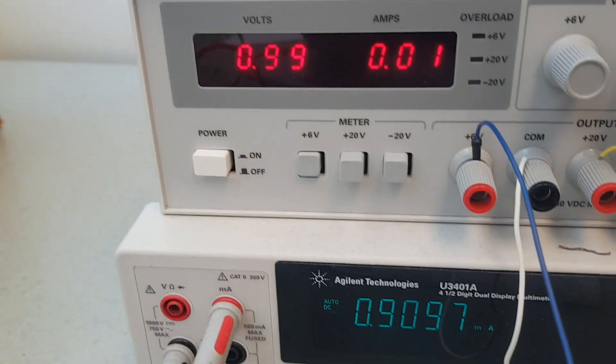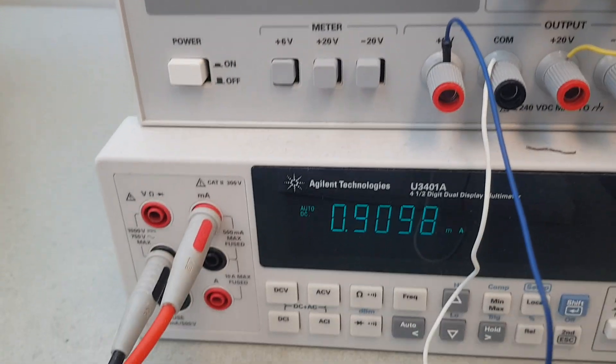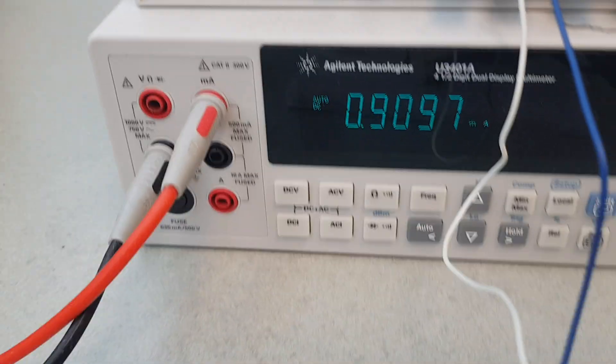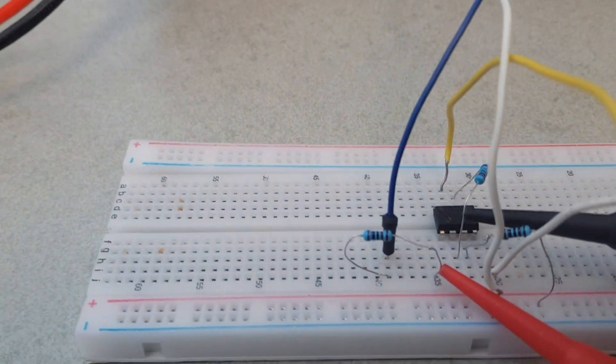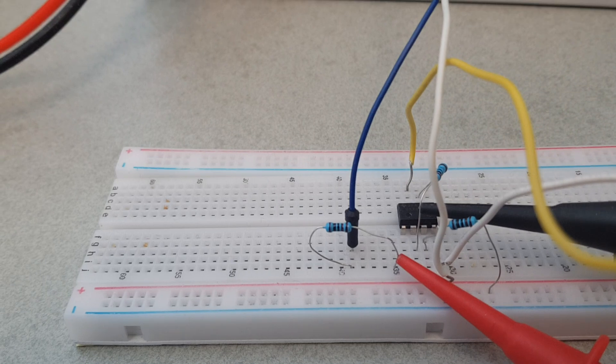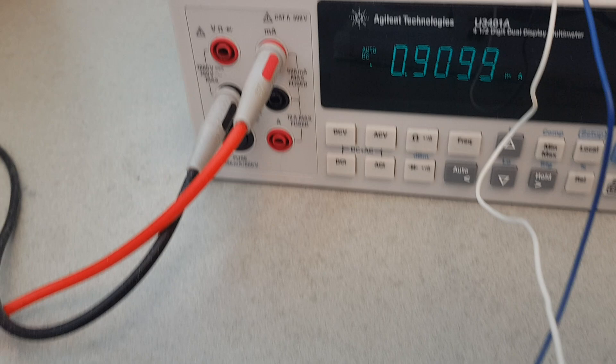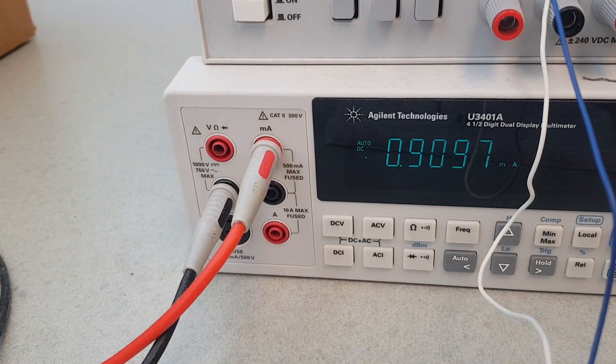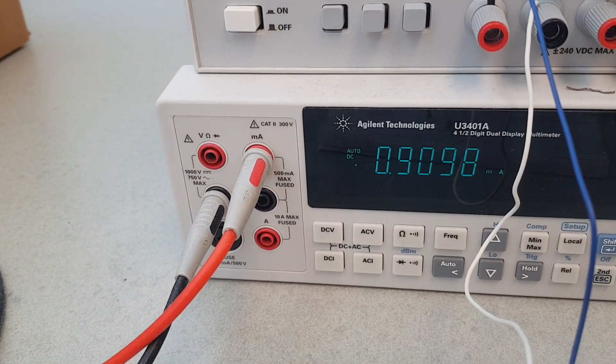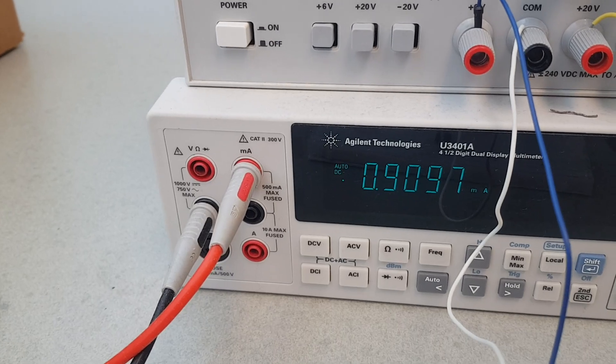Now if you come here and look, we apply the voltage 1 volt and this is basically your I1. This is the current that enters terminal number 2 of your op-amp circuit. It is equal to around 0.91 milliamps.